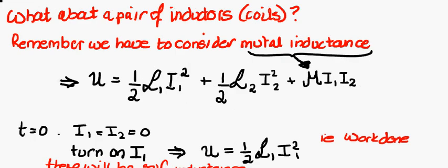But what about a case where we have a pair of inductors? In that case we need to consider our mutual inductance, which we learned from our lecture on Tuesday. We would expect stored energy related to the self-inductance and current of coil 1, similar case for coil 2, and then an extra term associated with the mutual inductance.